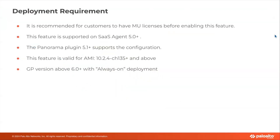This is also a 5.1 feature. Most deployments should already be able to leverage it and should be able to see the UI updates. One prerequisite is that the GP version should be 6.0 or above, with the always-on agent connection method.